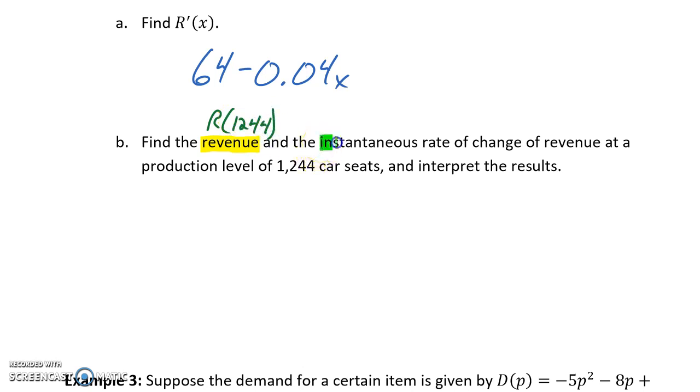And when we're told to find the instantaneous rate of change of the revenue, that means we want to go back and evaluate the marginal revenue function at that exact same production level.